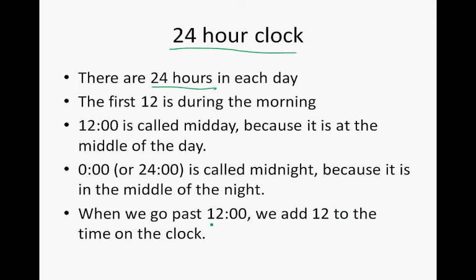So when we go past 12 o'clock in the afternoon, we add 12 to the time on the analog clock, that clock with the hands. What we do is we read the time and to get to 24-hour time, we will add 12 to any particular time. So this is a table to quickly explain what I meant.